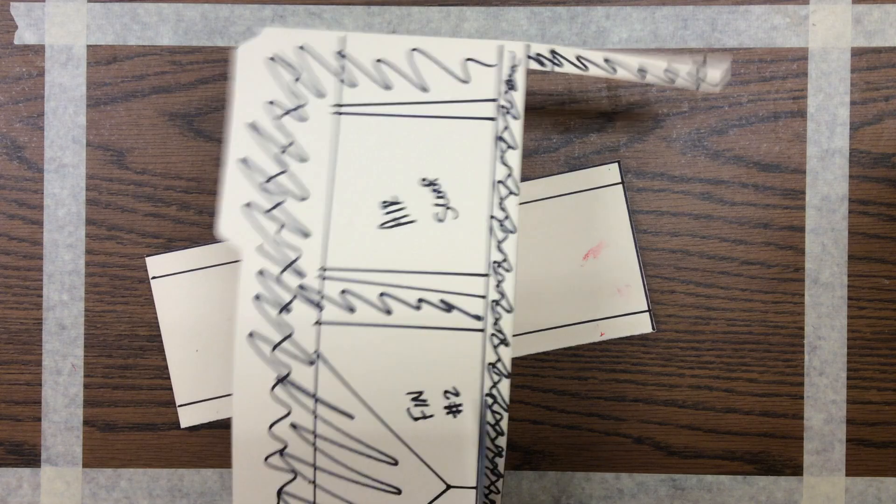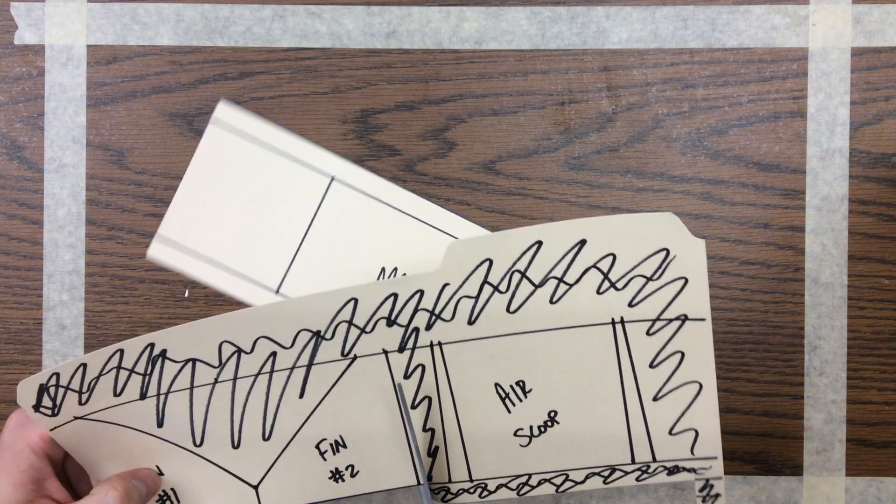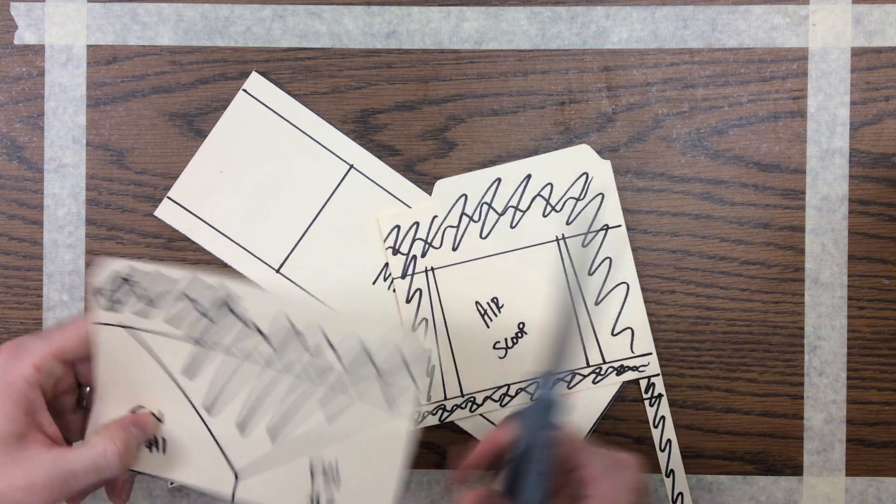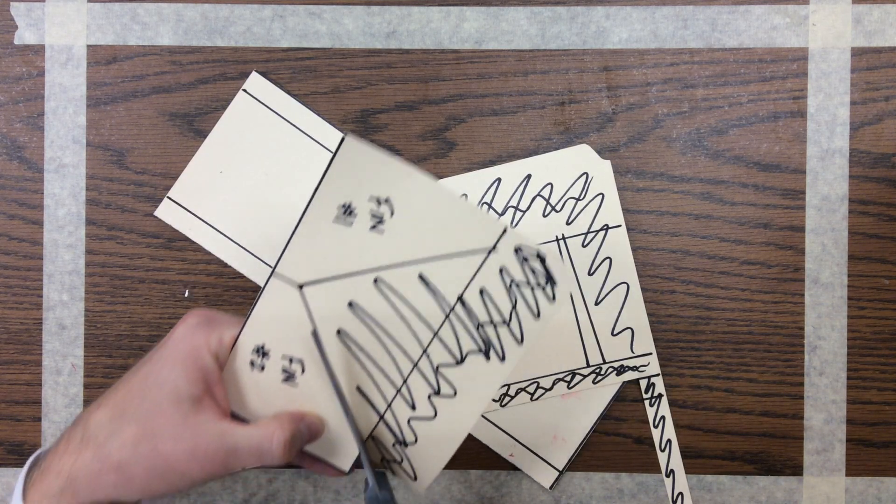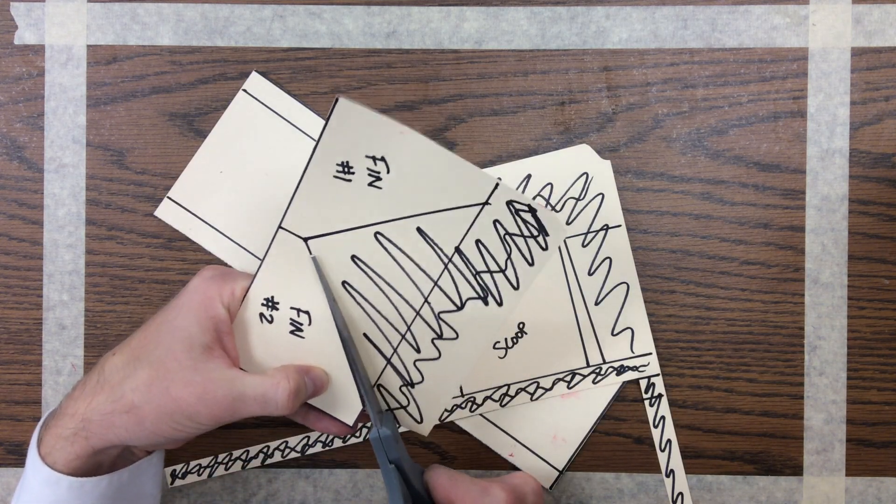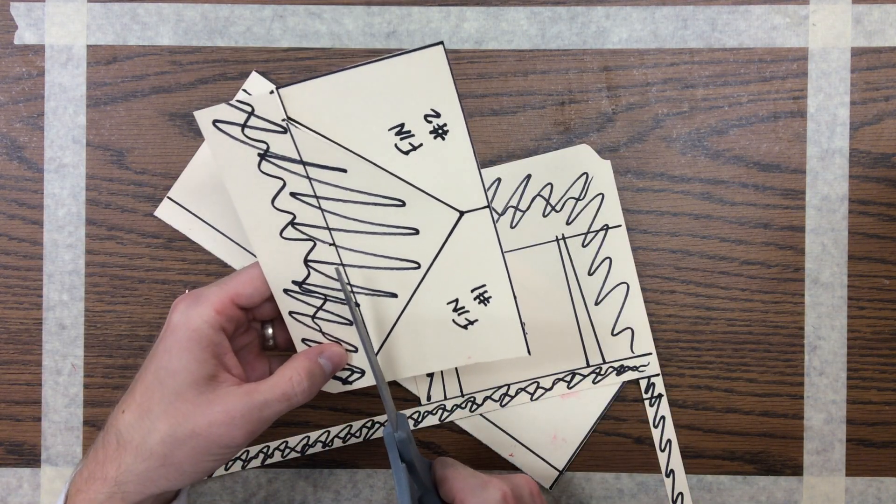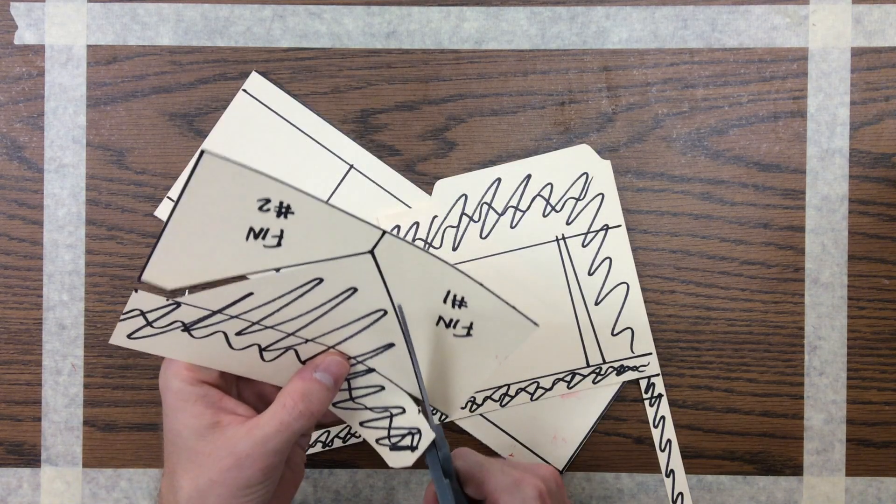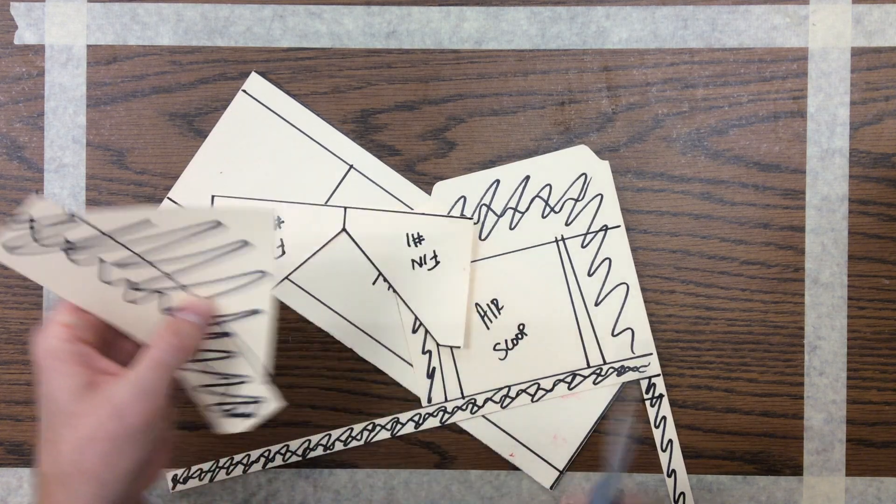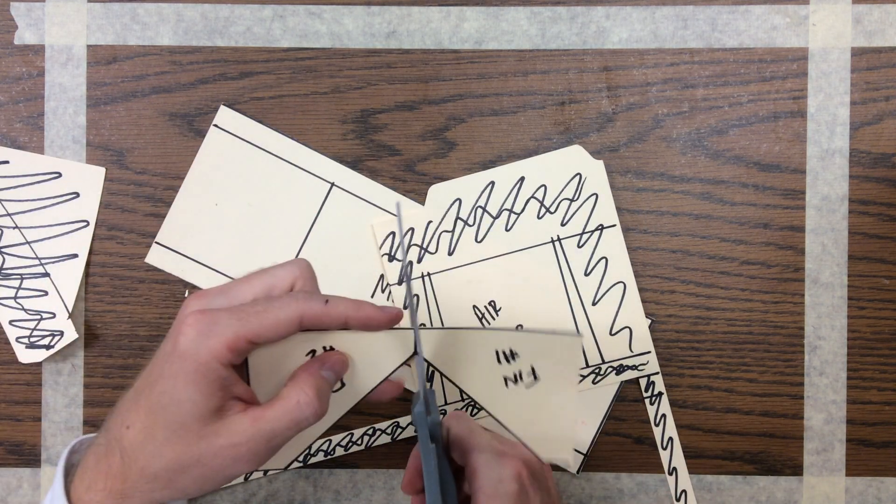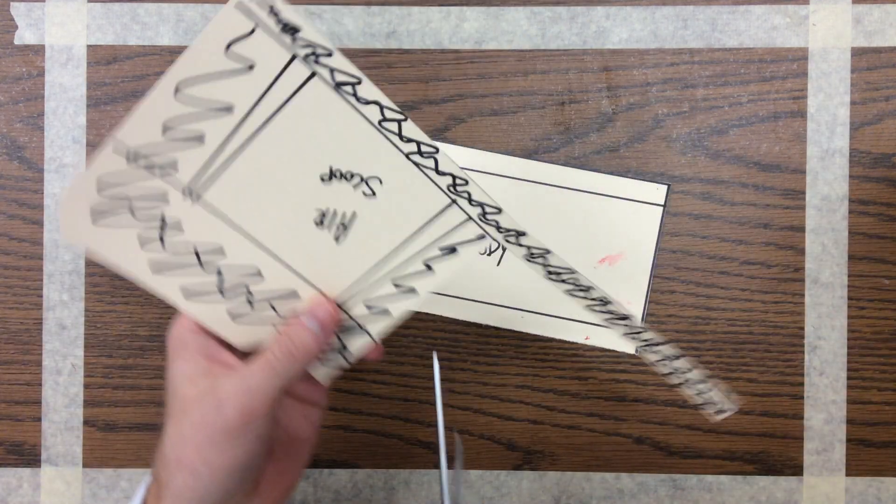So I'm going to cut each of these out. We have the main body cut out. Here's my two fins. Cut these each out. So fin one, fin two, and then finally the air scoop.